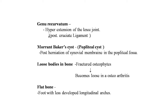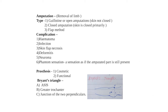Amputation means removal of a limb. There are three types: guillotine or open amputation (skin not closed), closed amputation (skin closed primarily), and the flap method. Complications of amputation include hematoma, infection, skin flap necrosis, deformities, neuroma, and phantom sensation — where the patient feels as if the amputated part is still present.